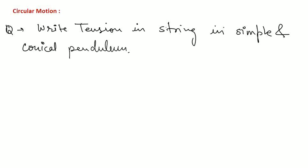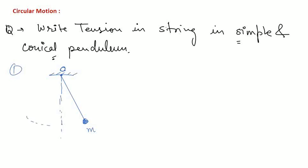For the simple pendulum — Part 1 — let O be the point of suspension, with a string of length l and a bob of mass m. Let's call the equilibrium position and say that at some instant, the angle between the string and the equilibrium is θ. The pendulum moves along an arc of a circle.